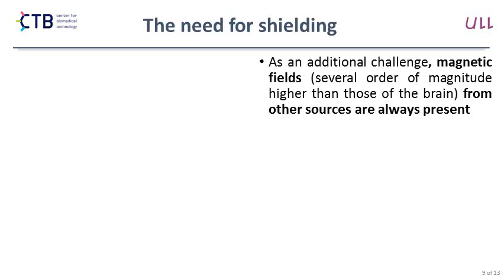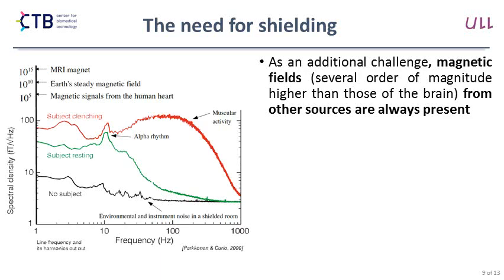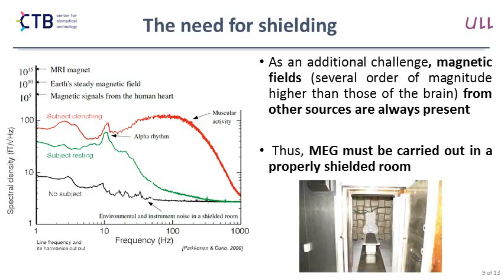Another important consideration is the need for shielding. The magnetic fields from brain currents are very small, and comparing with the magnetic signal from the human heart, which is much higher, and especially the Earth's magnetic field, which is several orders of magnitude greater, calls for the need to keep all this external activity out of the recordings. Normally this is achieved using a room shielded by metal with high magnetic permeability, called mu-metal, so that inside the room you have no magnetic activity other than from the body itself.